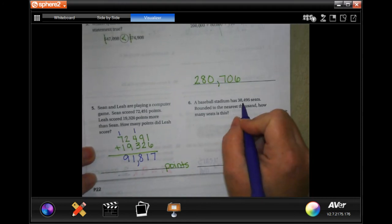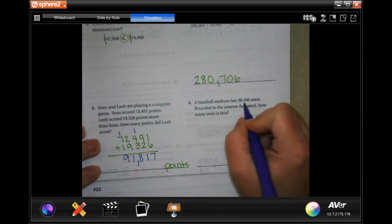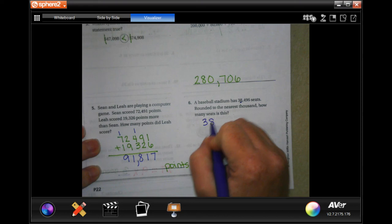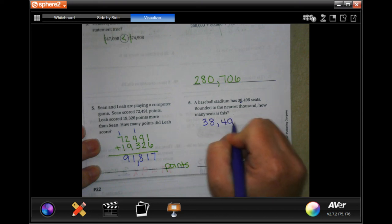A baseball stadium has 38,496. Round it to the nearest thousand. How many seats is it? So 38,496.